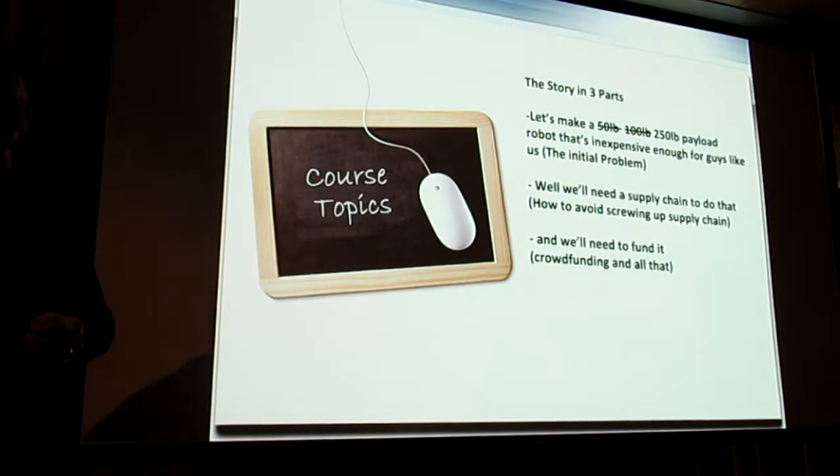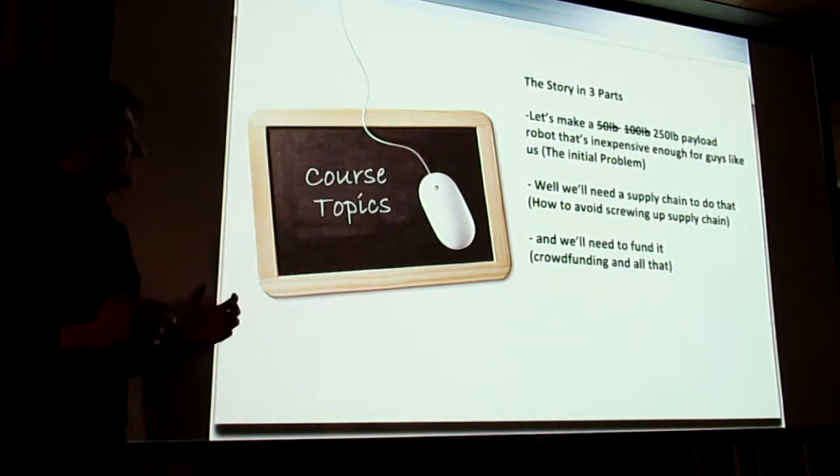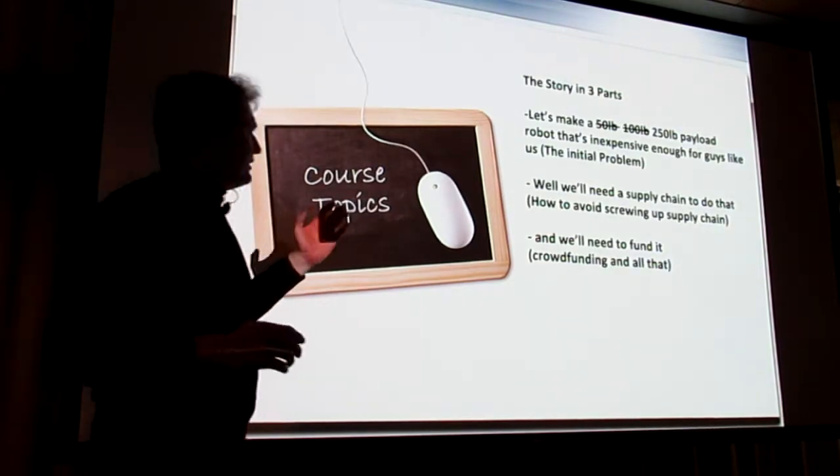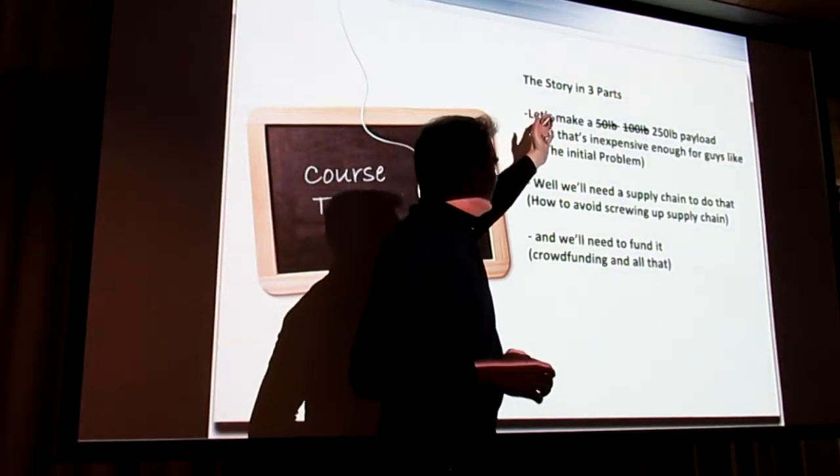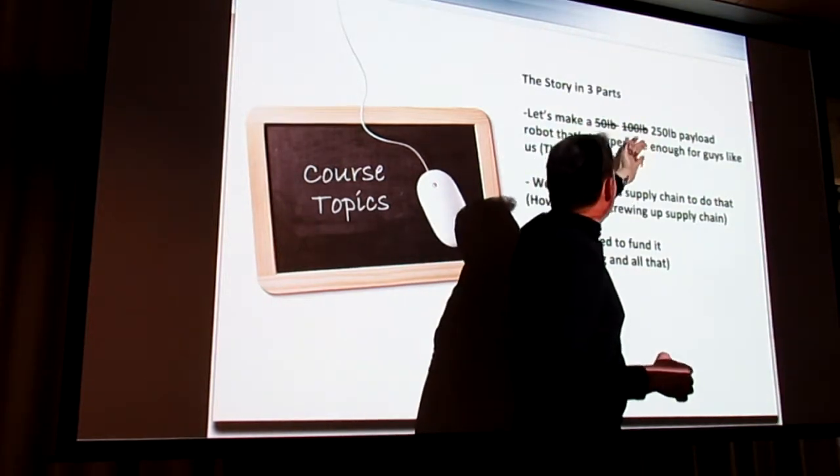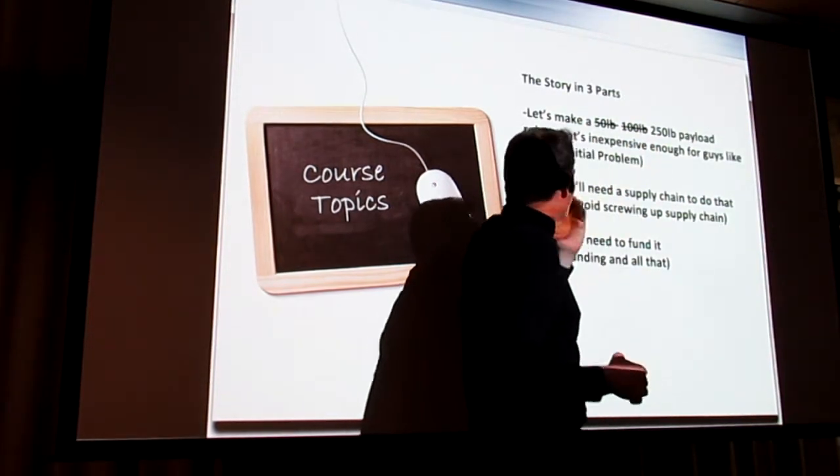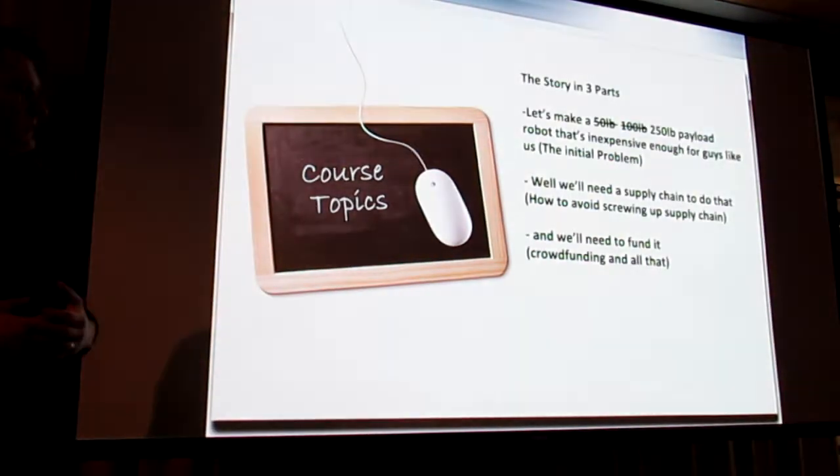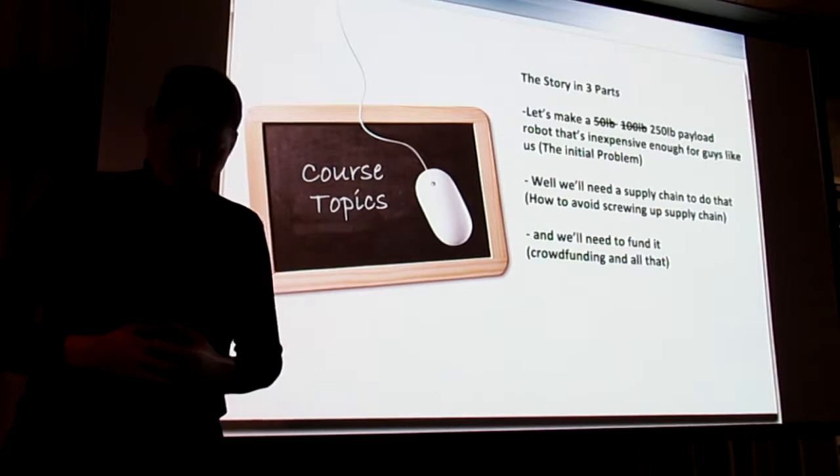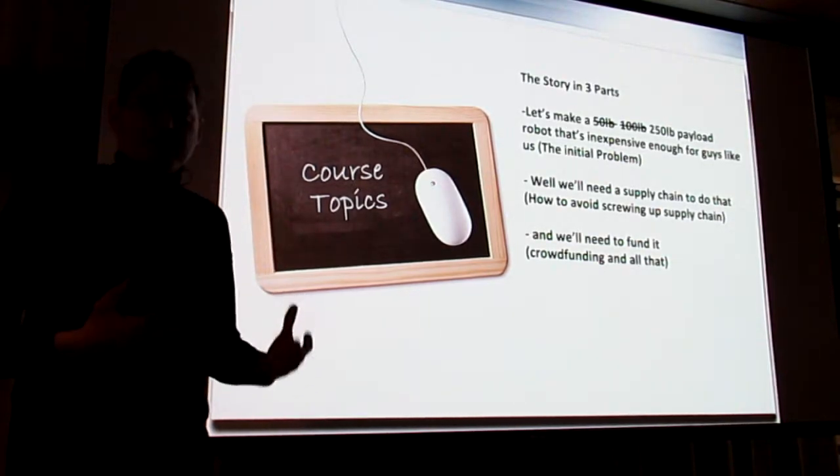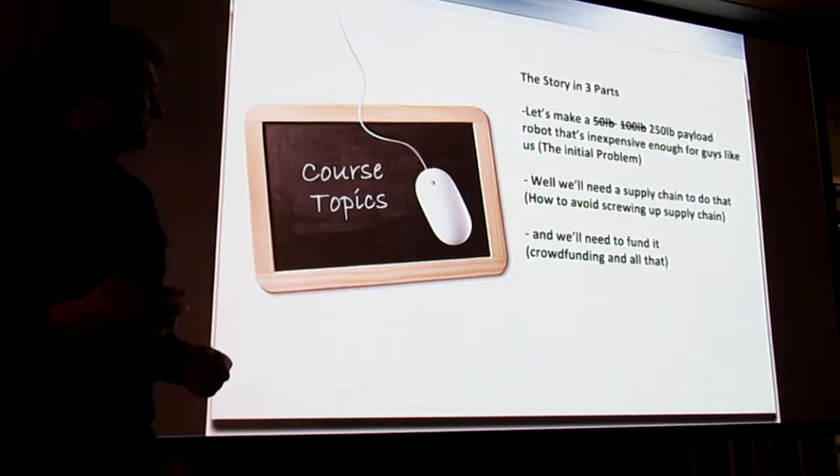So we're going to have a story in three parts. The story goes like this. The first part of the story is let's make a 50 pound payload, I mean 100 pound payload, I mean 250 pound payload robot that's inexpensive enough for guys like us to be able to afford it. And that was kind of the initial problem.